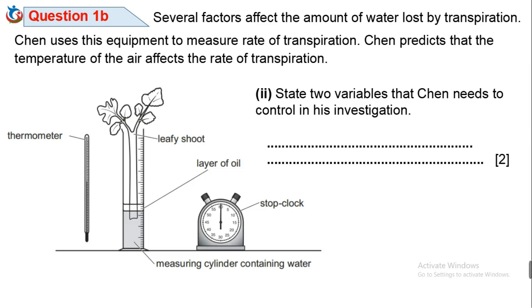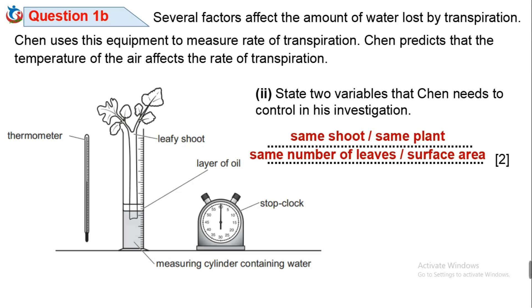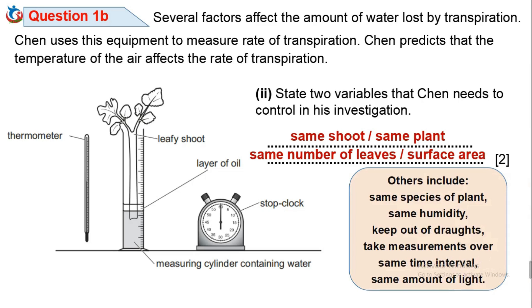Question 1b2: State two variables that Chen needs to control in this investigation. Variables that must be kept the same are called controlled variables. For Chen's investigation on how temperature of the air affects the rate of transpiration, controlled variables include: the same shoot or same plant, the same number of leaves and surface area, the same species of plant, the same humidity, the same measurement, and the same amount of light.